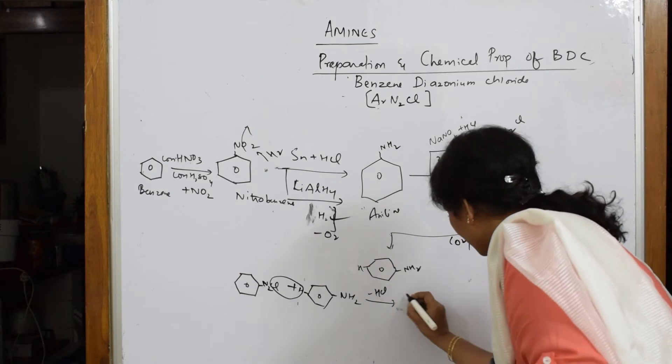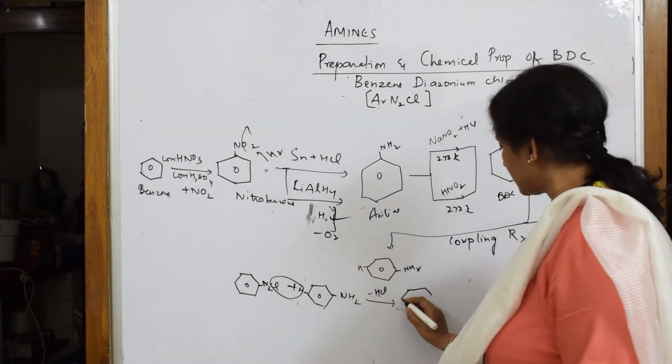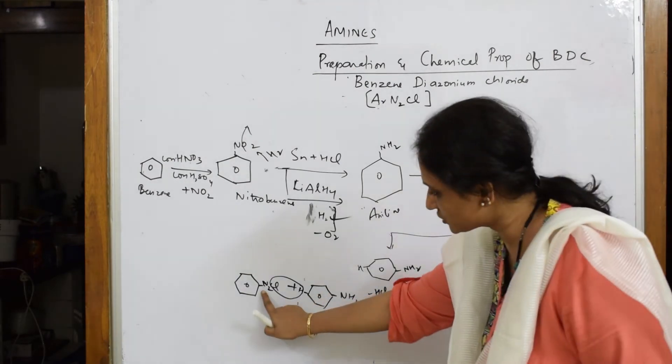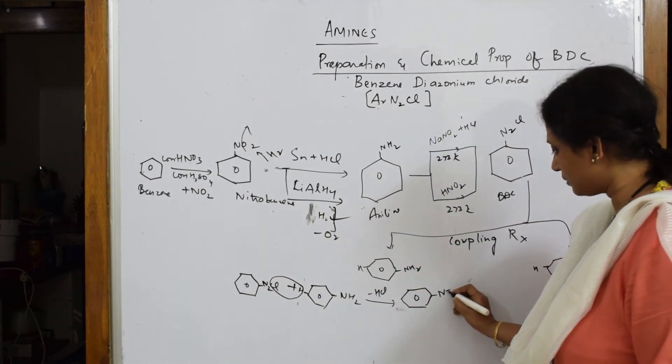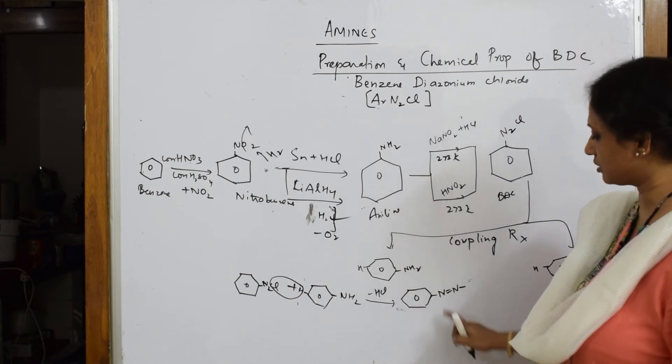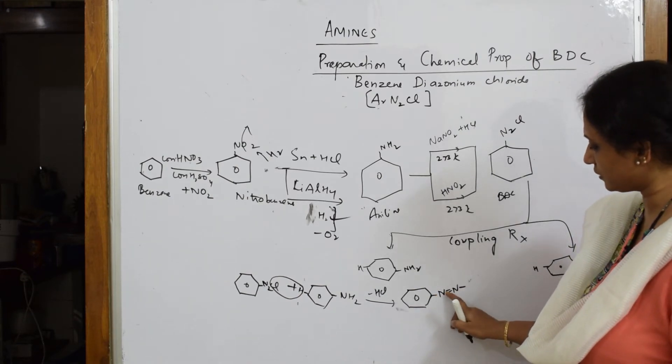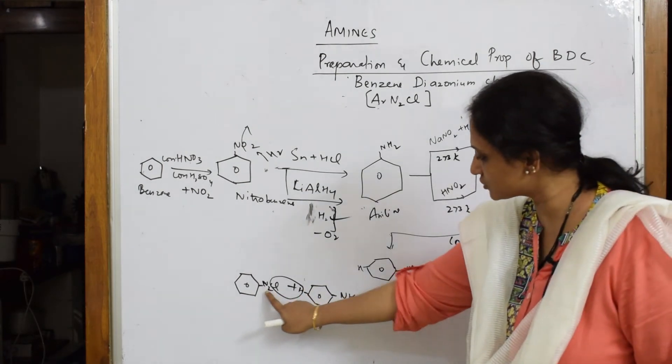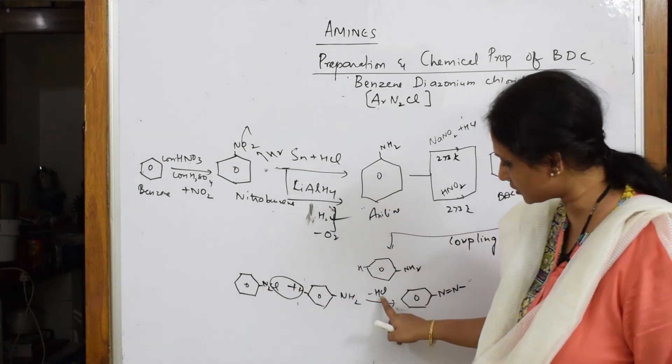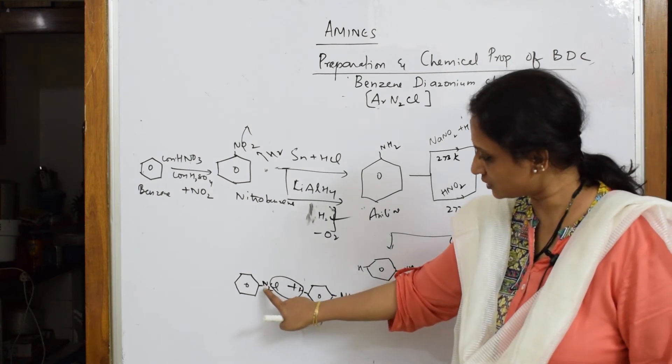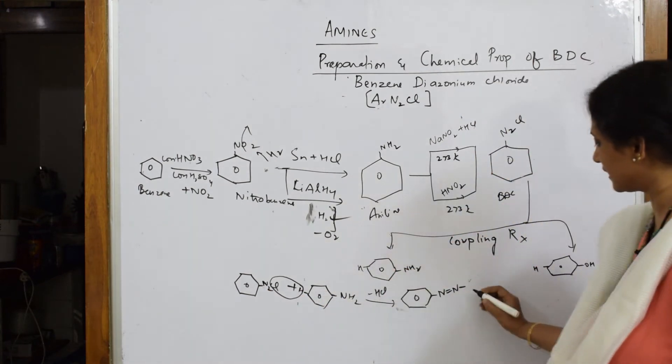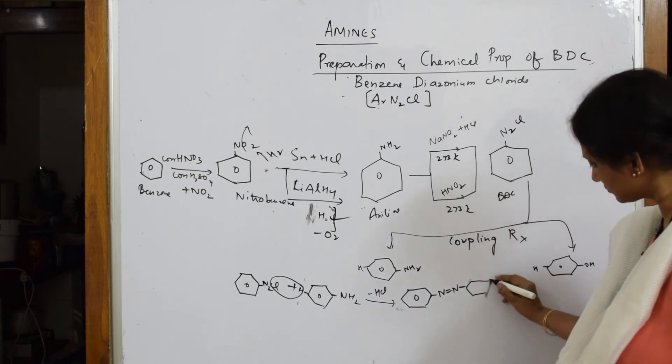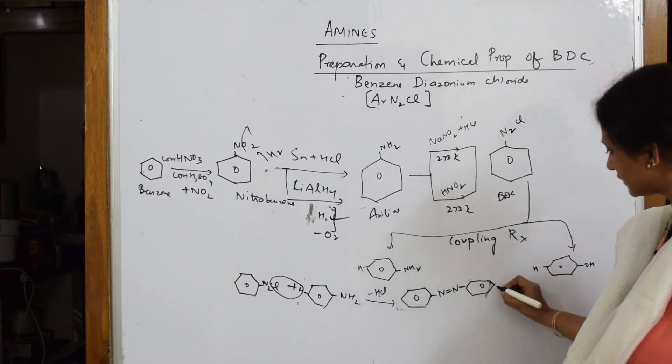Take this ring. Nitrogen is still there, N double bond N. Count 1, 2, 3, 4, 5, 6, 7, 8. HCl has gone out, so there is N2 here. That nitrogen is going to link with this ring. This is NH2. This is your first coupling reaction with amine.